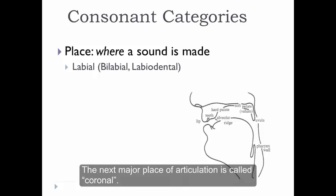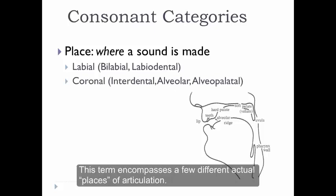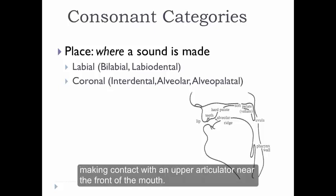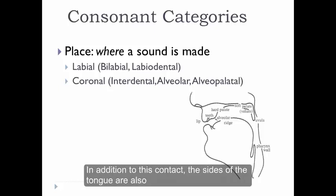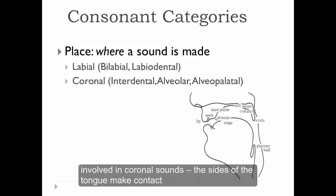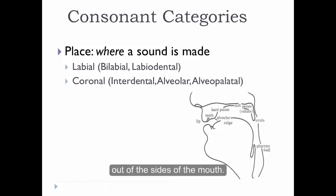The next major place of articulation is called coronal. This term encompasses a few different actual places of articulation. What unites them all is that the front part of the tongue is used, making contact with an upper articulator near the front of the mouth. In addition to this contact, the sides of the tongue are also involved in coronal sounds, making contact with the sides of the hard palate and preventing air from escaping out of the sides of the mouth.